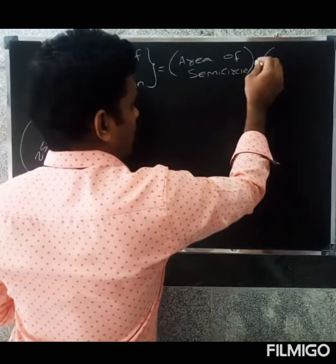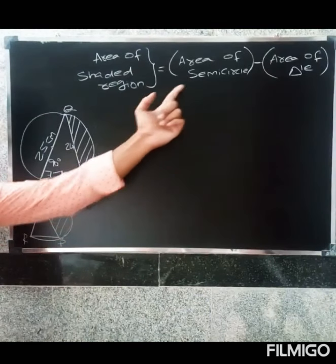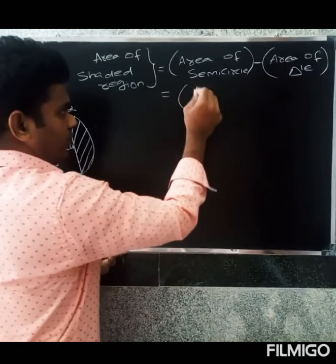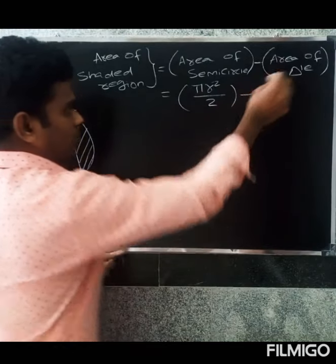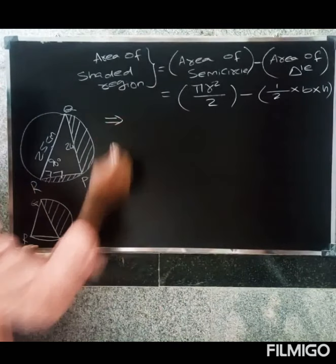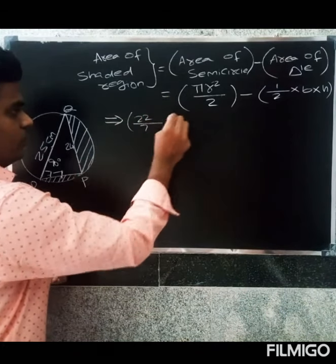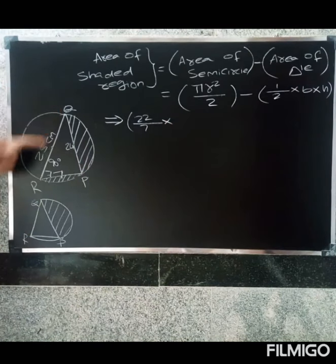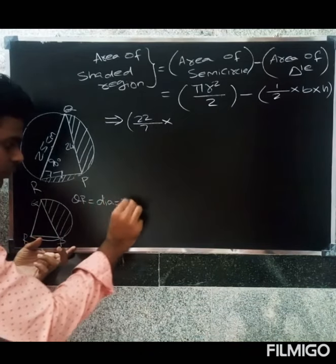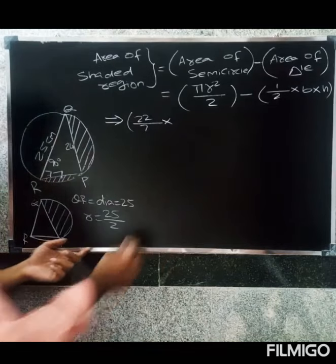Area of semicircle formula is pi r squared divided by 2, minus area of triangle which is half into base into height. Pi value is 22 by 7. The radius is QR divided by 2, so diameter is 25, radius equals 25 by 2.